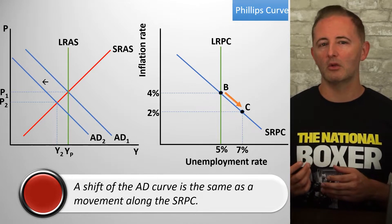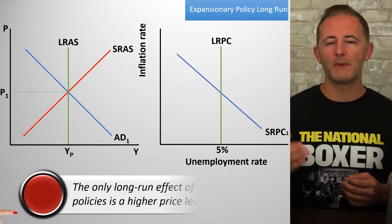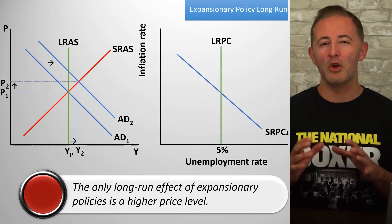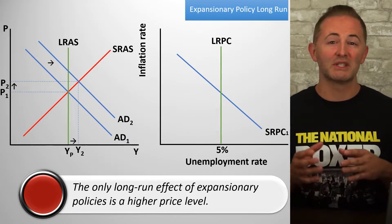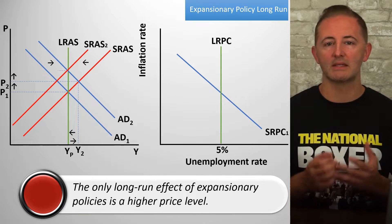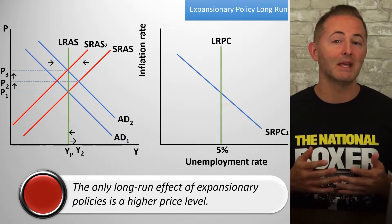Most often with this model we'll focus on expansionary and contractionary policies. But as mentioned already, these policies that are successful trading off higher inflation for lower unemployment don't work in the long run. This isn't actually new — look back at our ADAS model for proof. The expansionary policy lowers unemployment and raises the price level in the short run. But we know that the economy self-corrects when nominal wages that were sticky in the short run become flexible in the long run and increase, shifting the SRAS left. And this shows that the only long-run effect of expansionary policies is a higher price level.